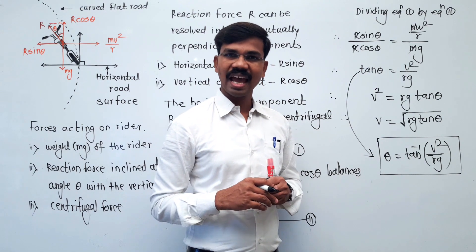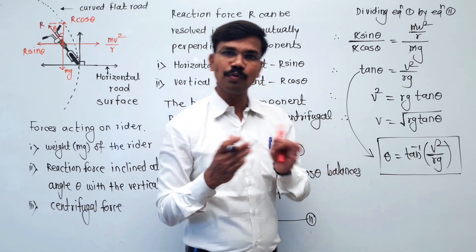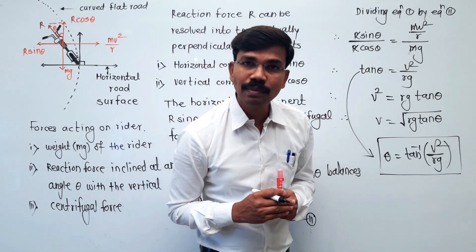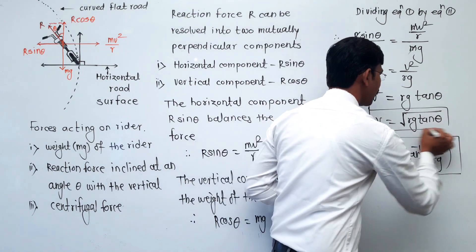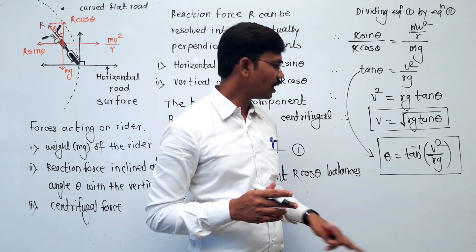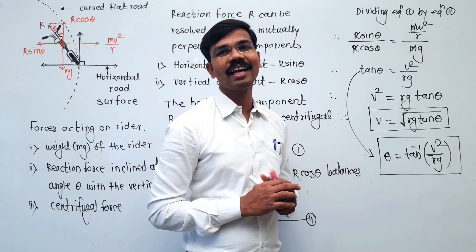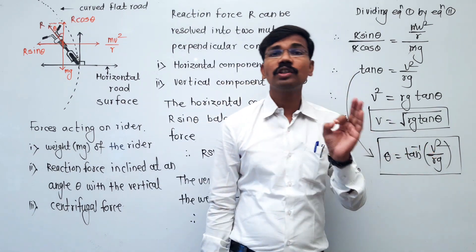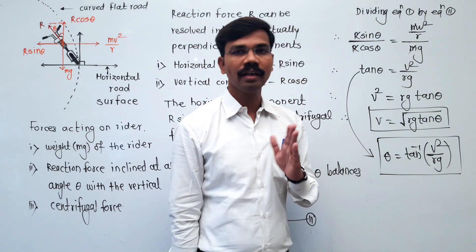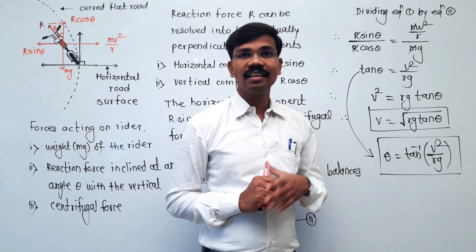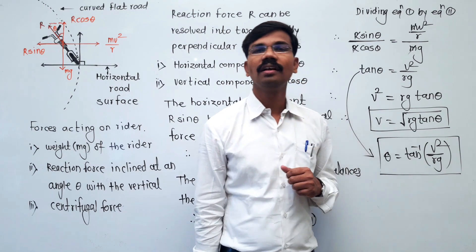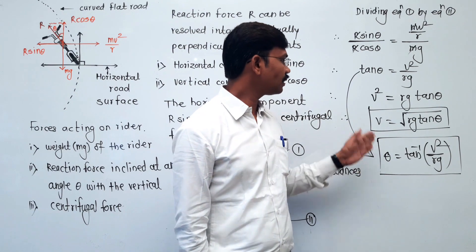This is the expression for the angle theta through which the rider leans in the inward direction. This is our angle expression. The speed of the rider along the horizontal curved road is v equals square root of rg tan theta. The angle theta depends on three factors: the velocity of the rider, the radius of curvature, and the acceleration due to gravity.